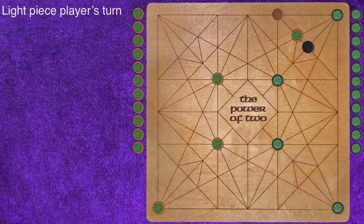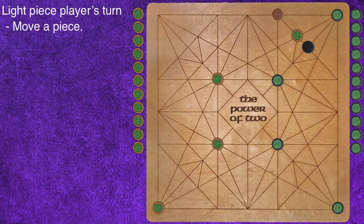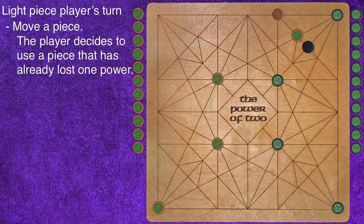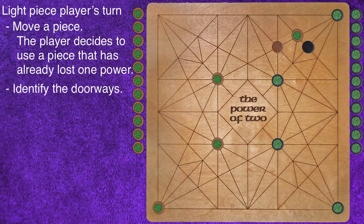The turn now passes back to the light piece player. The player decides to use a piece that has already lost one power. While this is a valid move, it may not be the best move. When we identify the doorways, we see that two doorways have been created.